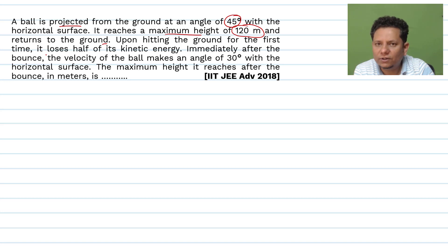Upon hitting the ground for the first time, it loses half of its kinetic energy. Immediately after the bounce, the velocity of the ball makes an angle of 30 degrees with the horizontal surface.